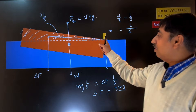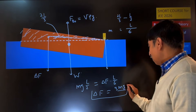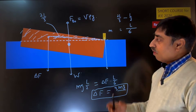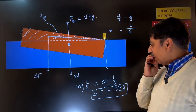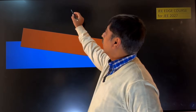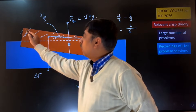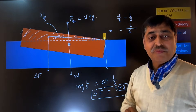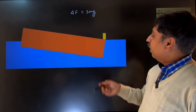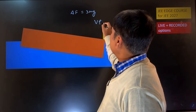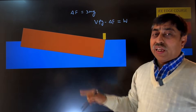Delta f equals 3Mg. What is delta f? Delta f is the weight of that triangular volume of water. Now we know delta f = 3Mg. The question asks for the volume of the bar. The actual buoyancy force is the total volume of the bar times ρg, minus delta f — that is the buoyancy force. This buoyancy force should equal the weight of the entire bar plus Mg.